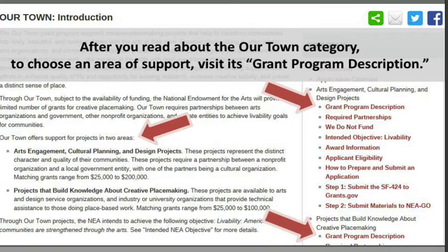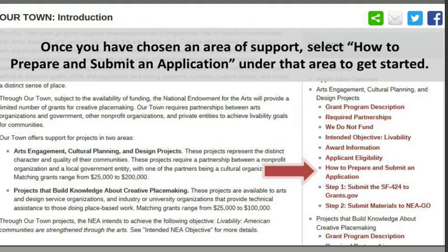A really helpful link is clicking on How to Prepare and Submit an Application. Regarding the application timetable, there's a precautionary deadline to ensure you get registered on Grants.gov and SAM.gov — we recommend completing that registration no later than September 7th, 2015. The SF-424 form is due through Grants.gov on September 21st, 2015. There are no exceptions to that rule, so get your registration sorted as soon as you get off this webinar so you're prepared to submit in September.